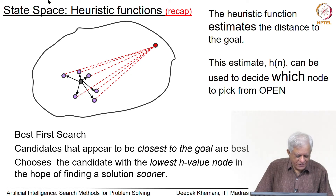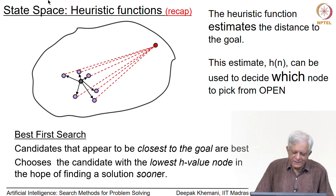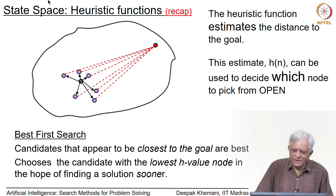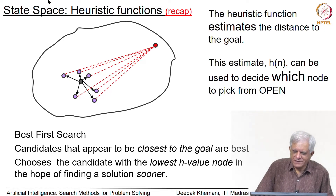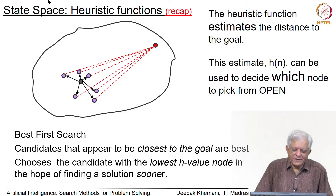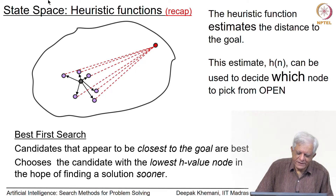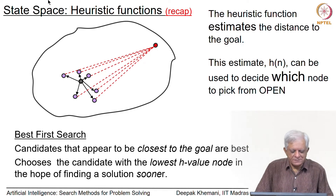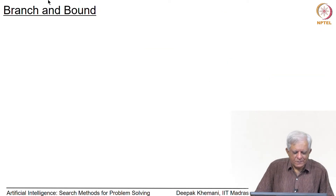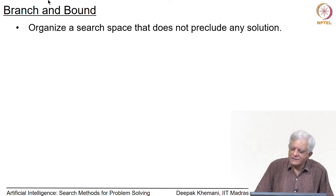In best first search, candidates that appear to be closest to the goal are considered the best and it chooses the node with the lowest h value in the hope of finding a solution sooner. While breadth first search was aimed at finding the shortest solution when edge costs are equal, best first search is aimed at finding the solution as quickly as possible.